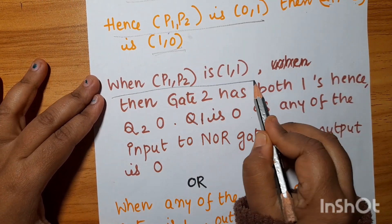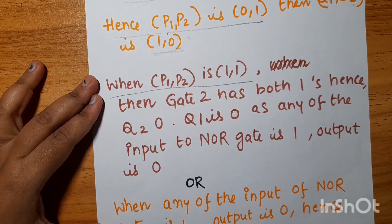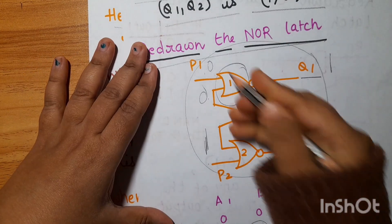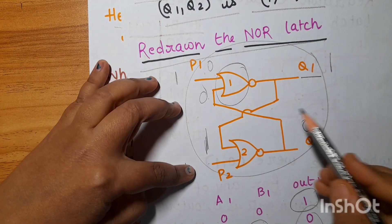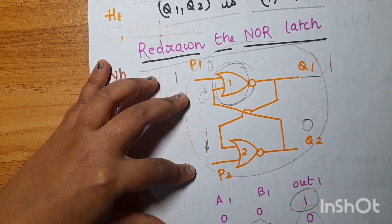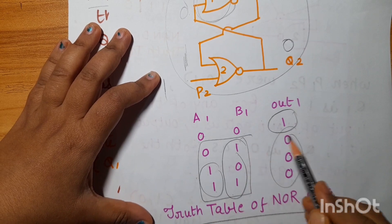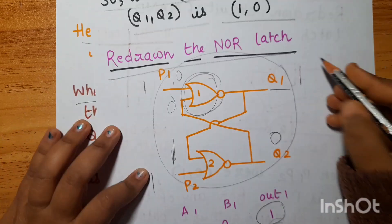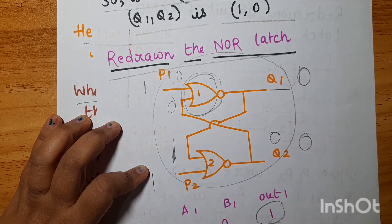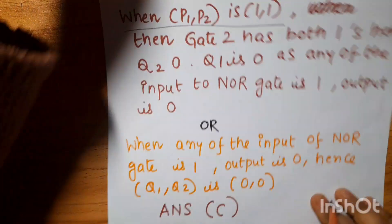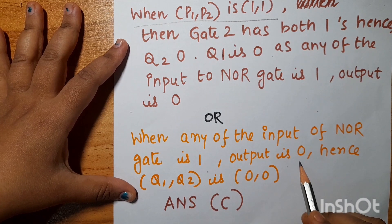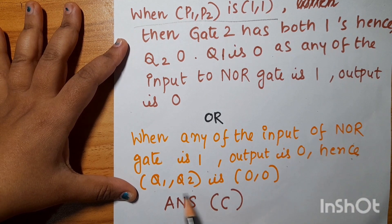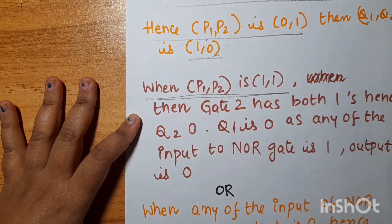When P1,P2 is 1,1: any input of the NOR gate being 1 gives output 0, so Q1,Q2 is 0,0. Hence when P1,P2 is 1,1, Q1,Q2 is 0,0.